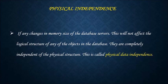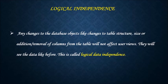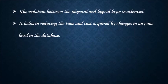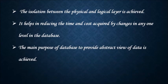Any changes to the database objects like changes to the table structures, size, or addition or removal of the columns from the table will not affect the user views. They will see the data like before. This is called logical data independence. By these two types of data independence, the isolation between the physical and logical layers is achieved. This helps in reducing the time and cost incurred by changes in any one level in the database. Hence, the main purpose of the database to provide abstract view of the data is achieved.